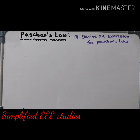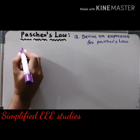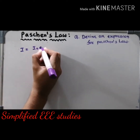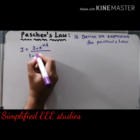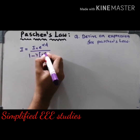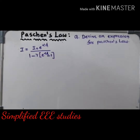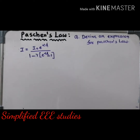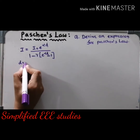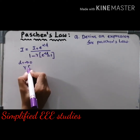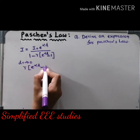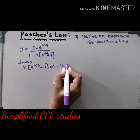Now let us derive an expression for Paschen's law. As everybody knows, the Townsend's current growth equation can be written as: I divided by I₀ equals e to the power alpha·d, whole divided by 1 minus gamma into (e raised to alpha·d minus 1), where alpha is Townsend's primary ionization coefficient and gamma is the secondary ionization coefficient. Now apply the breakdown condition — the denominator part is equated to zero: gamma into (e to the power alpha·d minus 1) equals 1. Call this equation number 1.